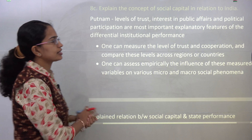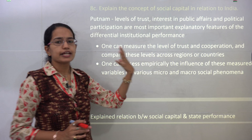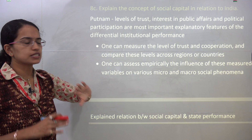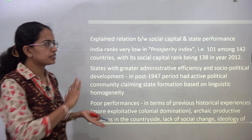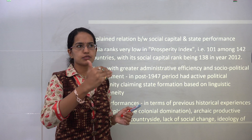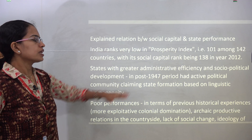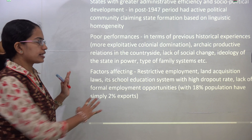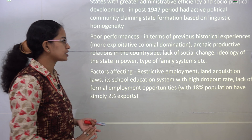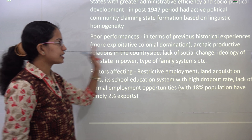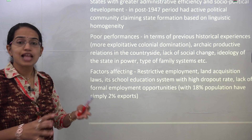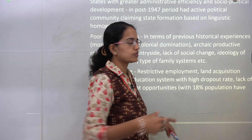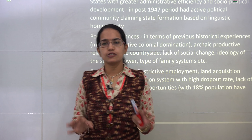The last question is on social capital. You have to explain Putnam's idea of social capital, how you can measure the level of trust and cooperation, and access to various parameters at micro and macro levels. Explain social capital and state performance, India's performance in respect to the prosperity index, and how rankings have changed — the post-1947 and pre-1947 periods and the political changes. Areas in which we are performing poorly include lack of social change, ideological differences, types of family systems, restricted employment opportunities, land acquisition, high dropout rates in school, and lack of formal education and formal employment.